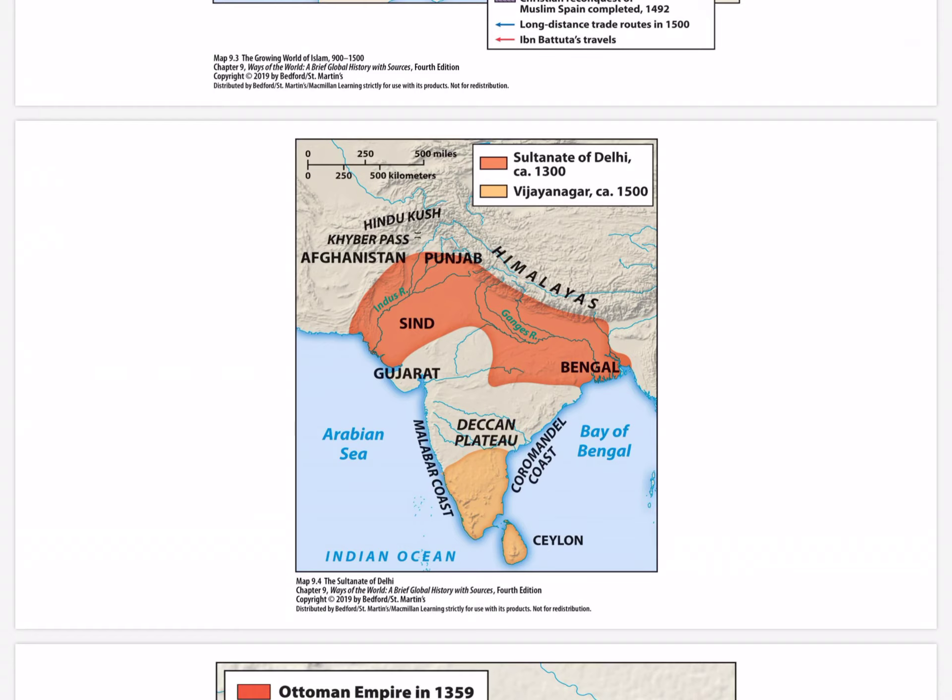The Sultanate of Delhi: between 1206 and 1526, a number of Muslim dynasties ruled northern India as the Delhi Sultanate, while an explicitly Hindu kingdom arose in the south after 1340. It drew on North Indian Muslim architectural features and made use of Muslim mercenaries for its military. Geographically, the Delhi Sultanate had difficulty crossing the Deccan Plateau, which kept it from uniting the entire subcontinent.